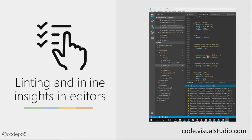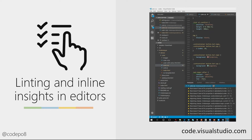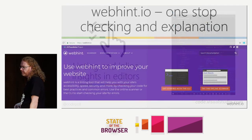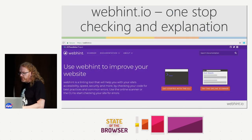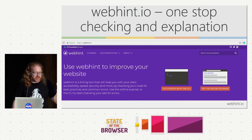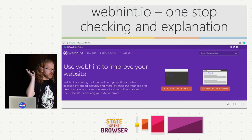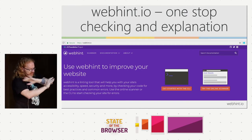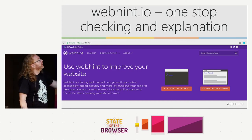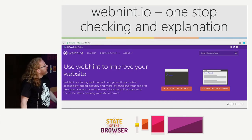Linting and inline insights in editors is a great thing. I love that I write CSS in Visual Studio Code and it tells me all the things that are wrong. And if I disagree with some, I can change the JSON config of my linter and say 'don't tell me about that — I know it's wrong for some but it's good for me.' So you can turn those things off. One thing we put together is webhint.io — which used to be called Sonar, then there was a copyright issue — and right now it's webhint.io.